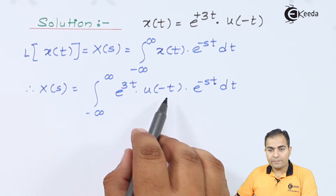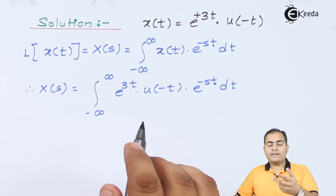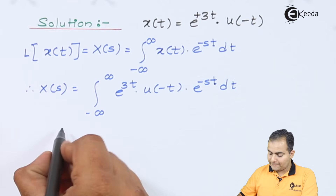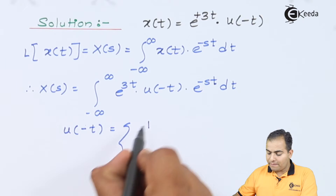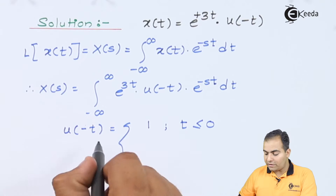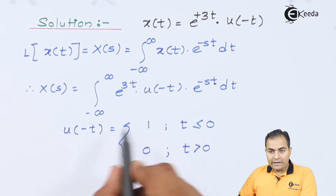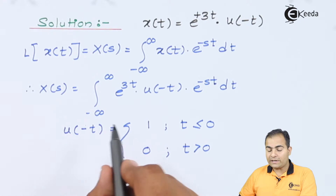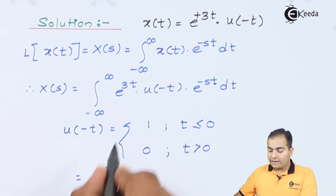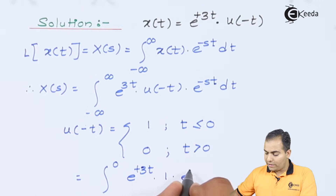What is important: as I told you in the previous video, the unit step inputs are used to change the intervals of integration, and that integration interval will be the ROC or region of that given function. The unit step u(-t) has amplitude 1 when t ≤ 0, because it is the mirror image of the unit step, and amplitude 0 when t > 0. So according to this, we will substitute the limits. This function — this unit step — is available only from minus infinity to 0.